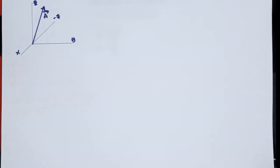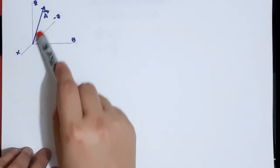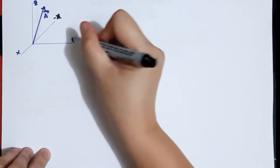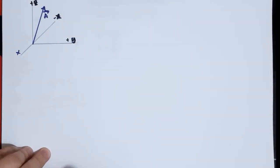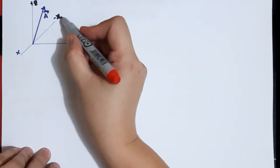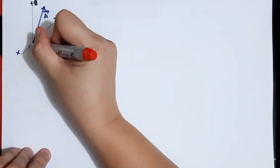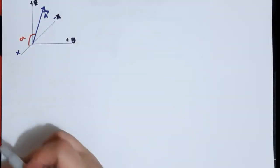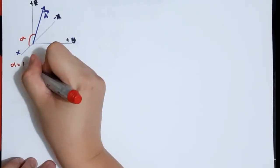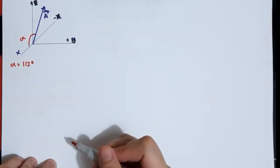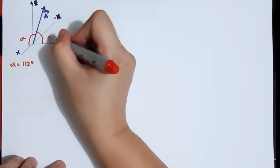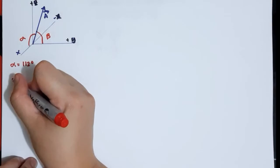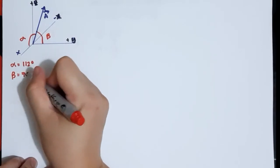Here is the drawing for our problem. If you look here, our vector A is lying on negative x, positive y, and positive z. If we take note of its angles, since it's lying on negative x, we assume that alpha should be higher than 90 degrees, which is correct because the given angle of alpha is equal to 112 degrees. Since our vector A is lying on positive y, we expect beta is less than 90 degrees, and based on the given, beta is 75 degrees, which is less than 90.